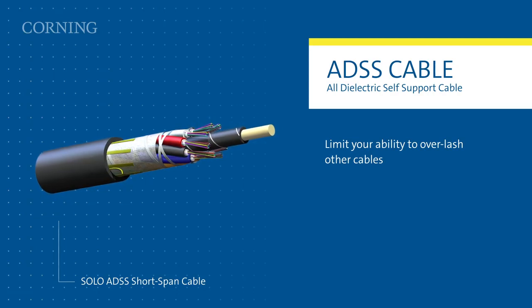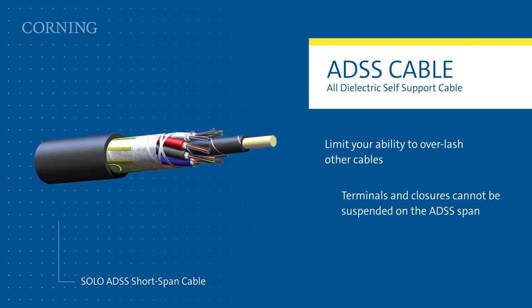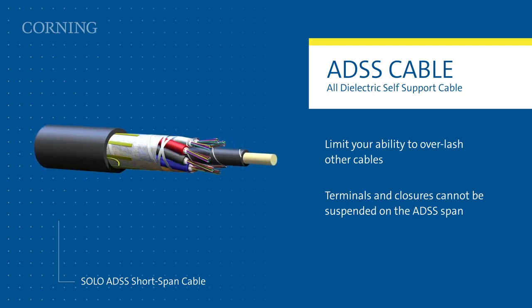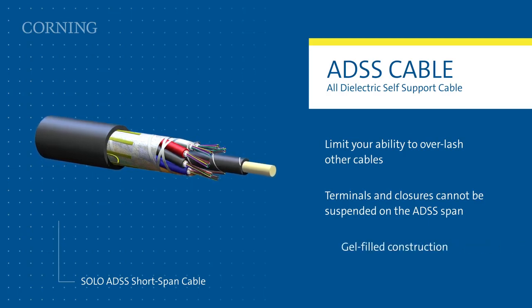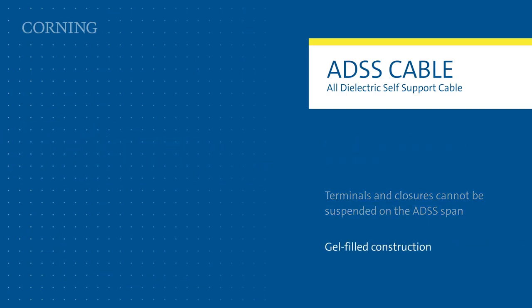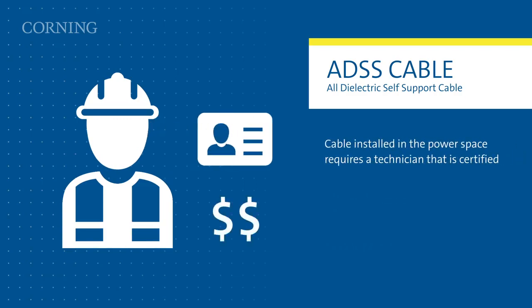Repeated access into the distribution cables is limited by proximity to the pole, as terminals and closures cannot be suspended on the ADSS span. Additional time for cable prep and cleaning are needed due to its gel-filled construction. Further, cable installed in the power space requires a technician that is certified to operate in that space, and these technicians command a higher rate.